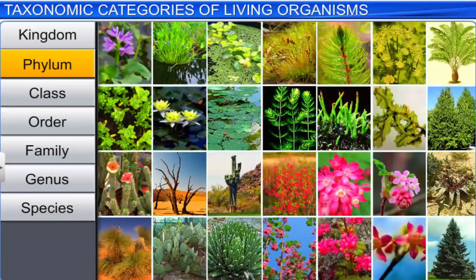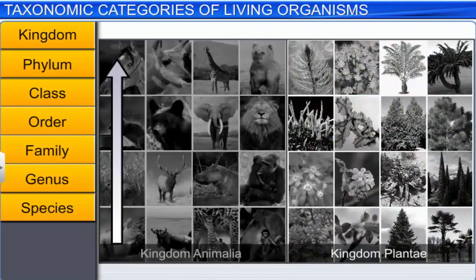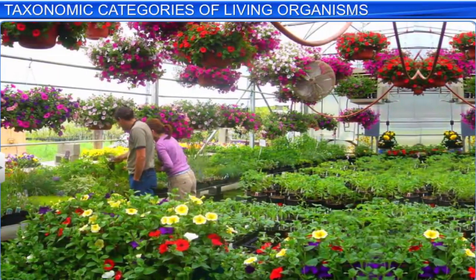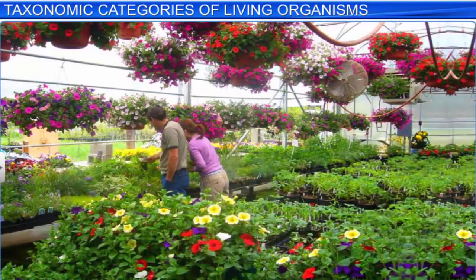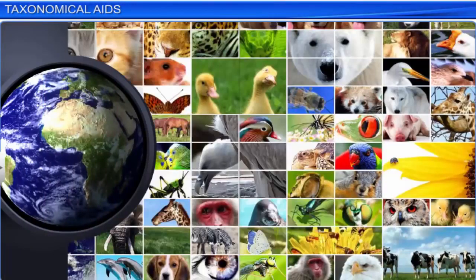The highest taxonomic category is Kingdom. All animals are put under Kingdom Animalia, and all plants fall under Kingdom Plantae. So as we go higher from species to kingdom, the number of common characters goes on decreasing. Thus, by observing the characteristic features of an individual organism, taxonomists have classified living organisms into different taxonomic categories.